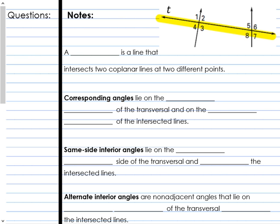Let's move right into our notes. A transversal is a line that intersects two co-planar lines at two different points. I've highlighted T — that's the transversal. It's intersecting those other two lines, and when that transversal intersects two lines, it forms pairs of angles.